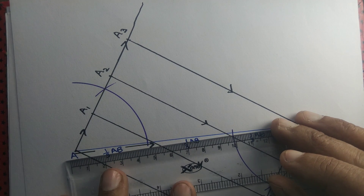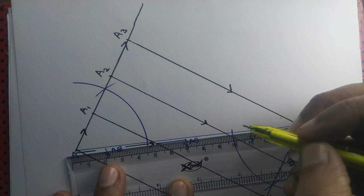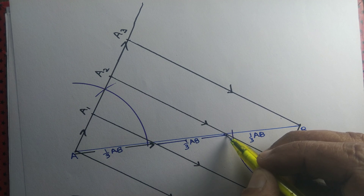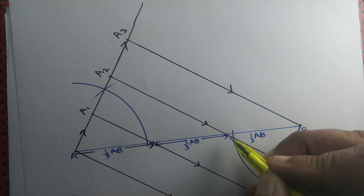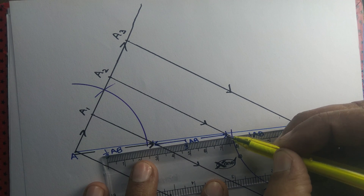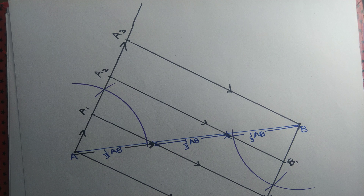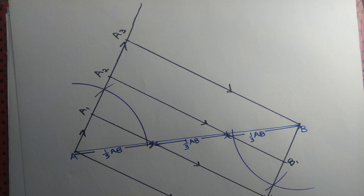In other words, we have trisected the line segment AB — we have divided it into three equal parts, each equal to one third of AB. Please note that we cannot trisect an arbitrary angle using scale and compass only. But as we have shown here, we can trisect an arbitrary line segment into three equal parts using scale and compass only.